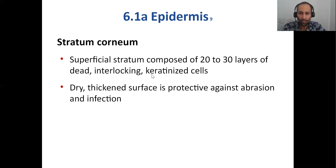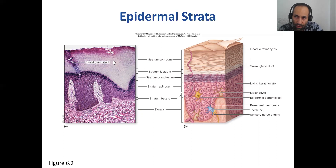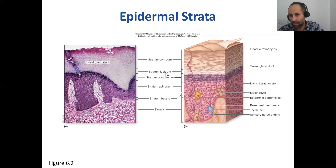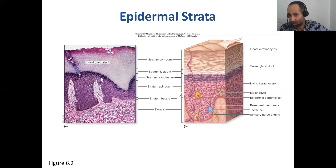If you look at a microscopic skin specimen and notice a stratum lucidum layer, that tells you the specimen came from thick skin — either the soles of the feet or the palms of the hands. You have to play medical detective here. These are the differences between thick skin and thin skin.